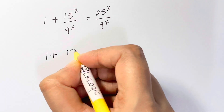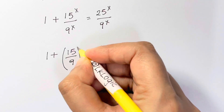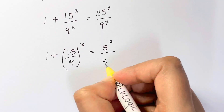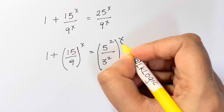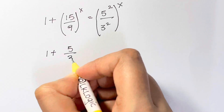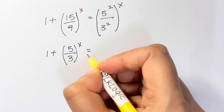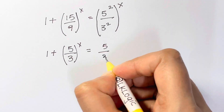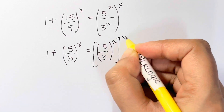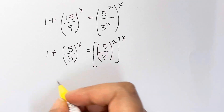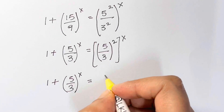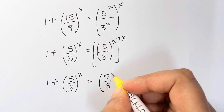We can write 1 plus (15/9)^x equals (25/9)^x. Since 25 = 5² and 9 = 3², we get (25/9)^x = (5/3)^(2x). Simplifying 15/9 gives 5/3, so the equation becomes 1 plus (5/3)^x equals (5/3)^(2x).